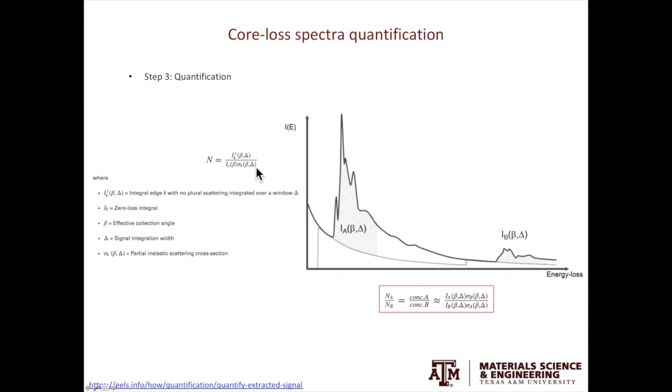It describes the possibility of having the inelastic scattering for this specific K edge. Notice for IK and sigma K, there are brackets beta and delta. What this tells you is the intensity and the partial inelastic cross-section at the collection angle beta using an energy window delta. Again, here you can see the importance of beta in EELS.